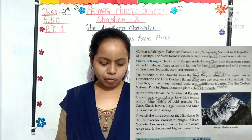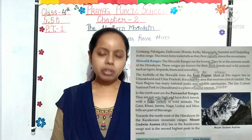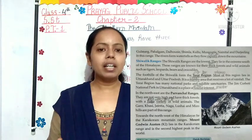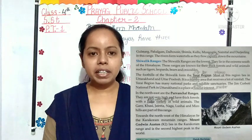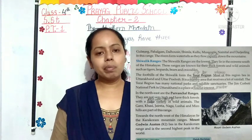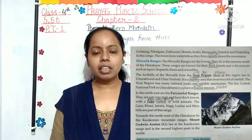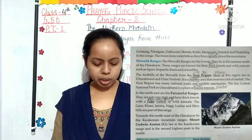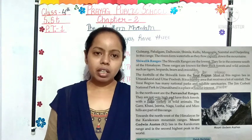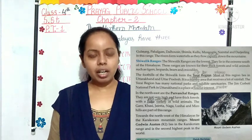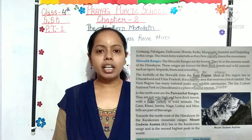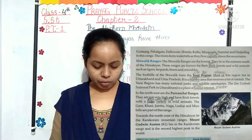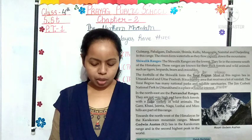The Purvanchal ranges are not very high and have thick forests with a huge variety of wild animals. This range is not very high but contains many types and varieties of wild animals. The Garo, Khasi, Jaintia, Naga, Lushai and Mizo Hills are part of this range — these are some important hills that are part of the Purvanchal range.